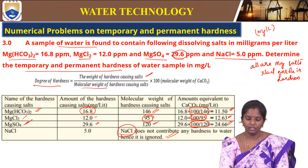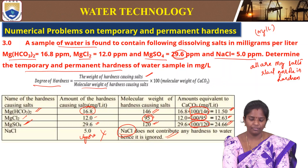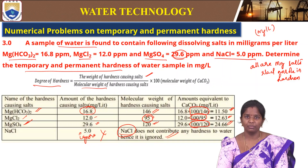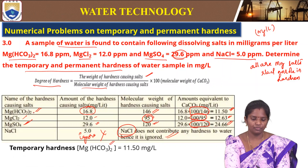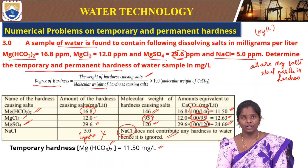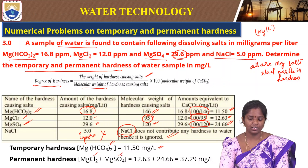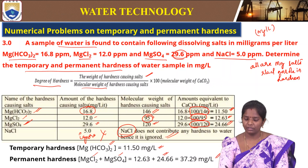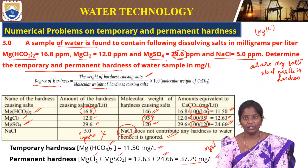Sodium chloride does not contribute to any hardness, so ignore NaCl wherever it appears. Temporary hardness is just because of the bicarbonate — 11.5 mg/L. Permanent hardness is due to chlorides and sulphates of magnesium: 12.63 + 24.66 = 37.29 mg/L. These are the temporary and permanent hardnesses present in this particular water sample.